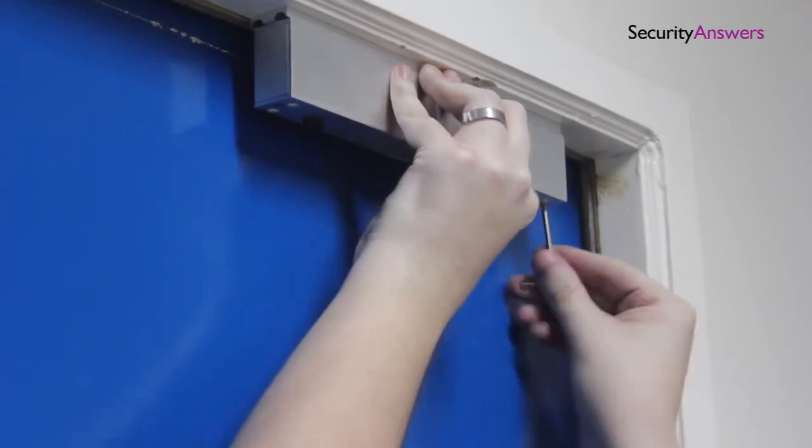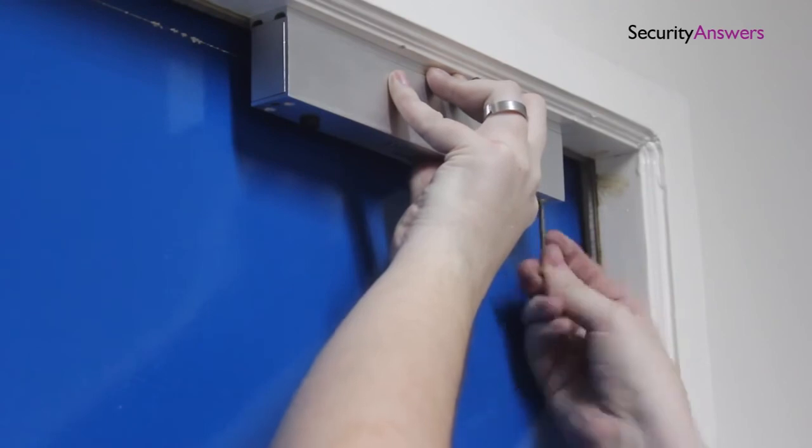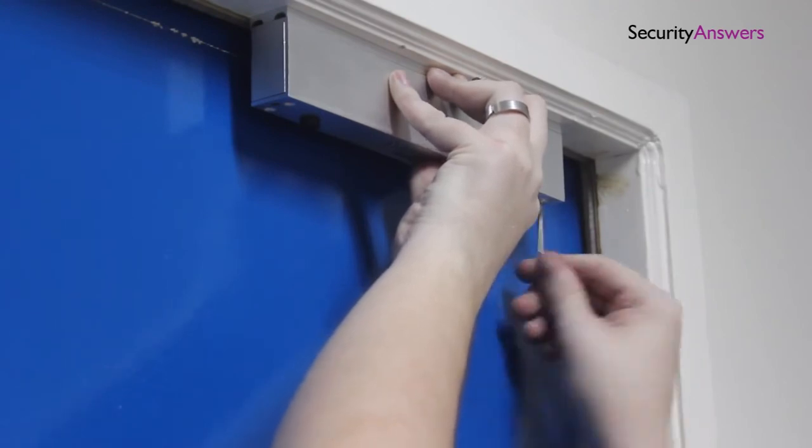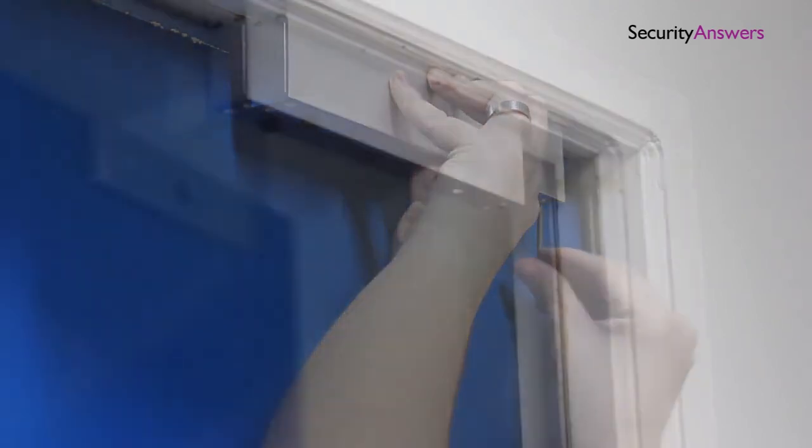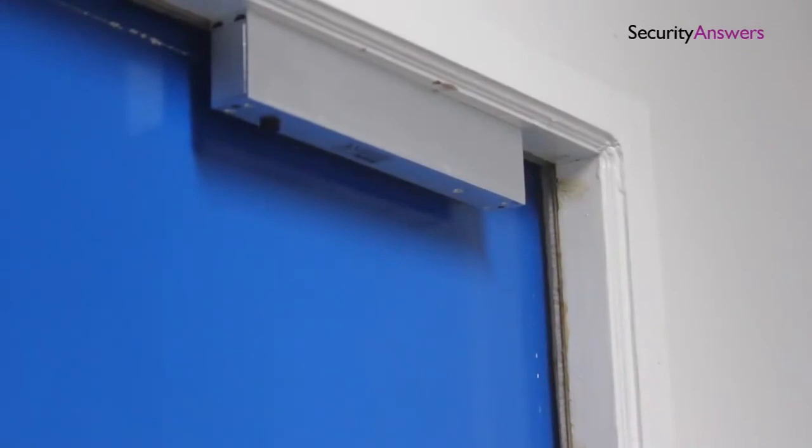Once again it's important to remember that the two magnets should sit flushed together to ensure a decent connection can be made for the lock to work. Now that we've completed fitting the EM lock.